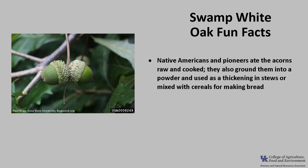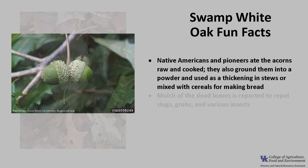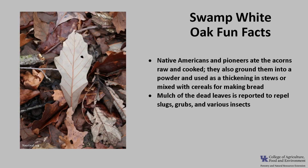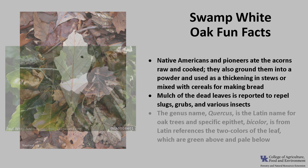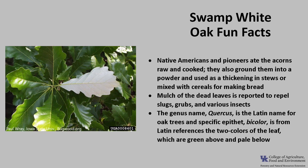Now for a few fun facts about Swamp White Oak. Native Americans and pioneers used to eat the acorns both raw and cooked. They would also grind them into a powder and use it as a thickening in stews or mix it with cereals for making bread. Mulch of the dead leaves is reported to repel slugs, grubs, and various insects. The genus name Quercus is Latin for the oak trees, and the specific epithet bicolor is from Latin and references the two colors of the leaf, which are dark green above and pale below.